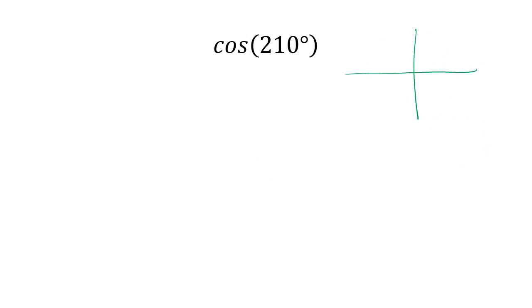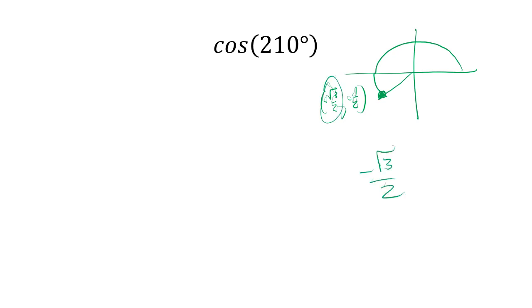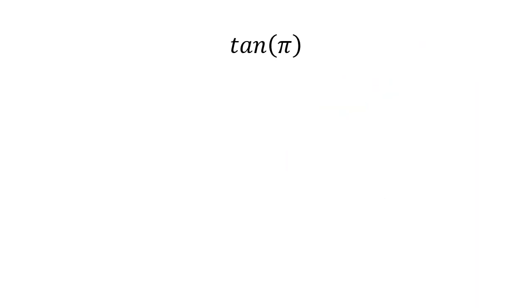Cosine of 210 degrees. 210 degrees is 180 plus another 30, so we have a 30-degree reference angle in quadrant 3. The coordinates are (-√3/2, -1/2), and cosine is the x-value, so the answer is -√3/2.